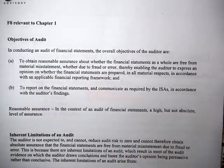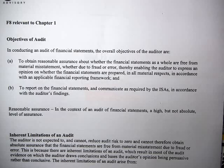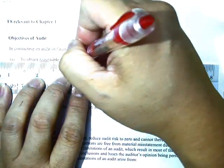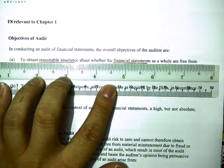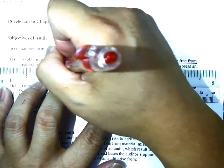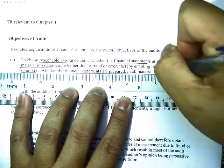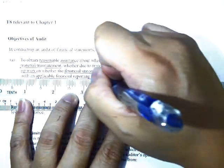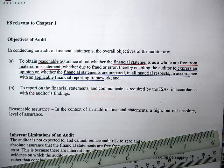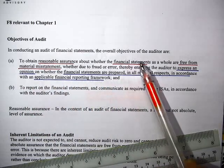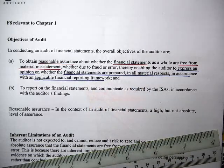If you look at the objective of an audit, based on what the standard says, we need to obtain reasonable assurance that financial statements as a whole are free from material misstatement. With that reasonable assurance, you can then express an opinion whether financial statements are prepared in all material respects according to your framework. All those keywords — opinion, material, financial statement reporting framework — must all pop up in your mind. If you do not recall, please refer to the notes.